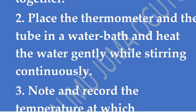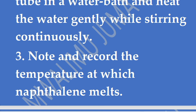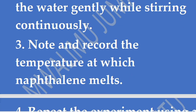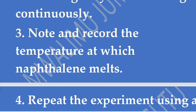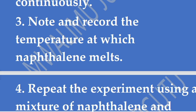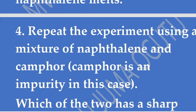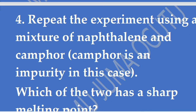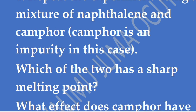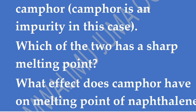We note and record the temperature at which naphthalene melts. We are first using pure naphthalene to determine its melting point. Then we repeat the experiment using a mixture of naphthalene and camphor, where camphor acts as an impurity. After completing the first experiment, we mix the remaining naphthalene with camphor and repeat the procedure. The question we ask: which of the two has a sharp melting point, and what effect does camphor have on the melting point of naphthalene?